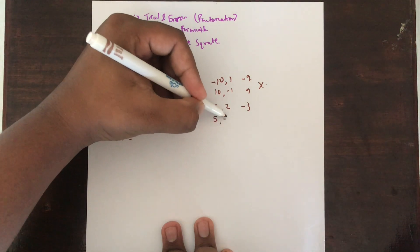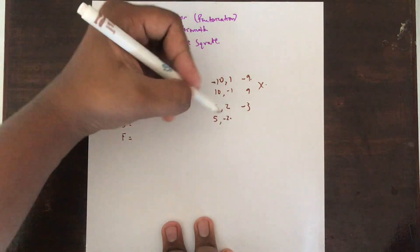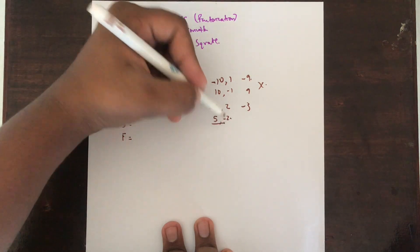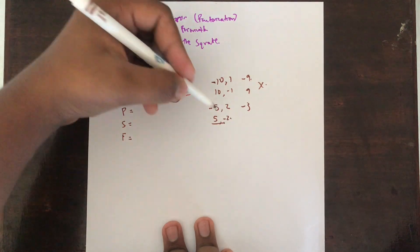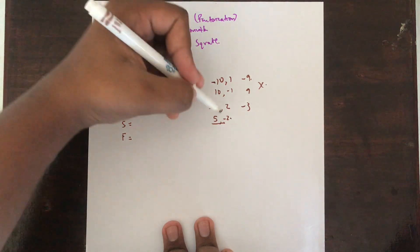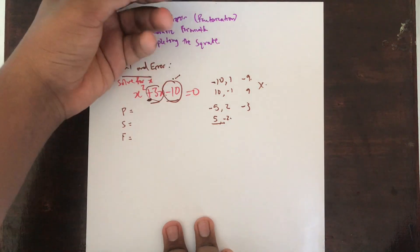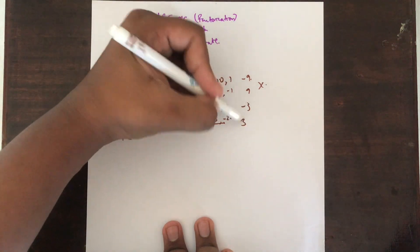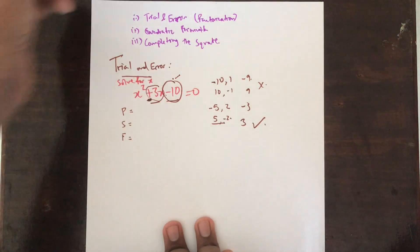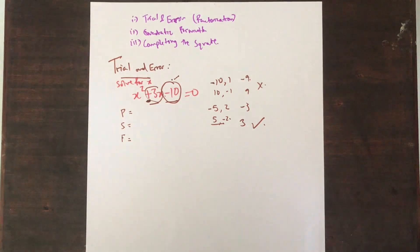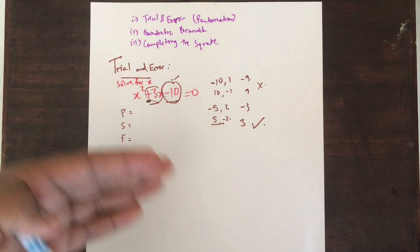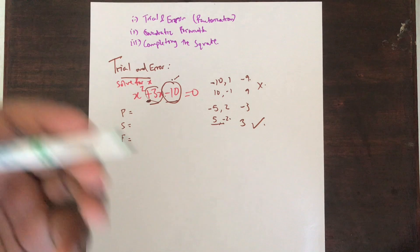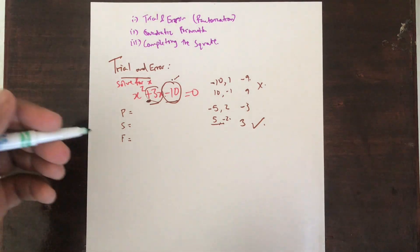What if we do 5 and minus 2? If you multiply these two you get minus 10, and if you add them you get plus 3 — 5 minus 2 is 3. So this is the one that works. This is where the trial and error aspect is shown — you try out different combinations and see which one works best.